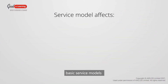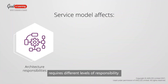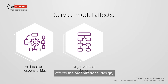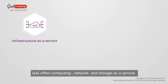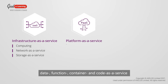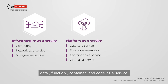Each of the three basic service models requires different levels of responsibility for the layers of the technology architecture. This in turn affects the organizational design, including the positioning and structure of an IT team within the consumer organization. Typically, IaaS offers computing, network and storage as a service. PaaS offers data, function, container and code as a service.